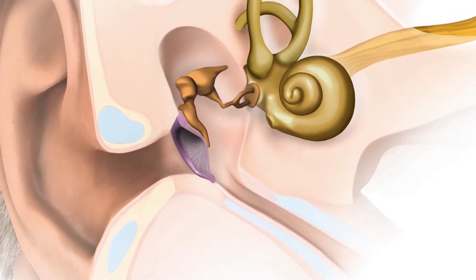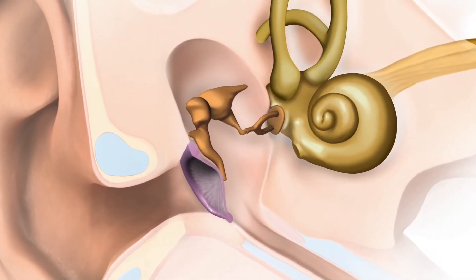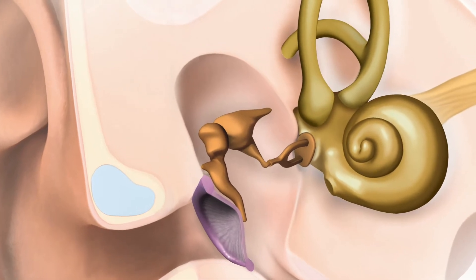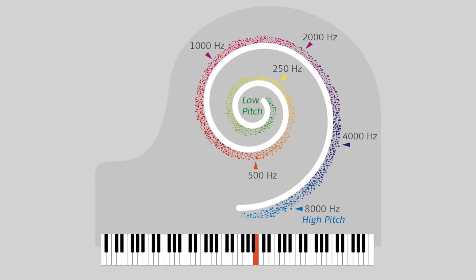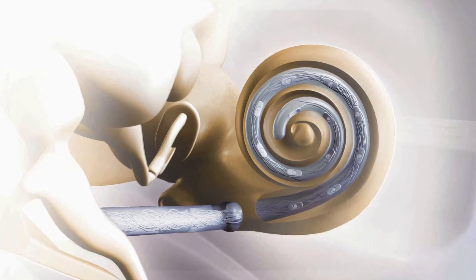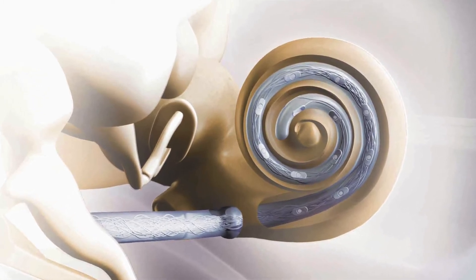The normal hearing ear expects frequencies to be presented at specific locations within the inner ear. A cochlear implant is designed to mimic this property, but can place these frequencies at the wrong locations. The length and position of an electrode array determines where these frequencies go.